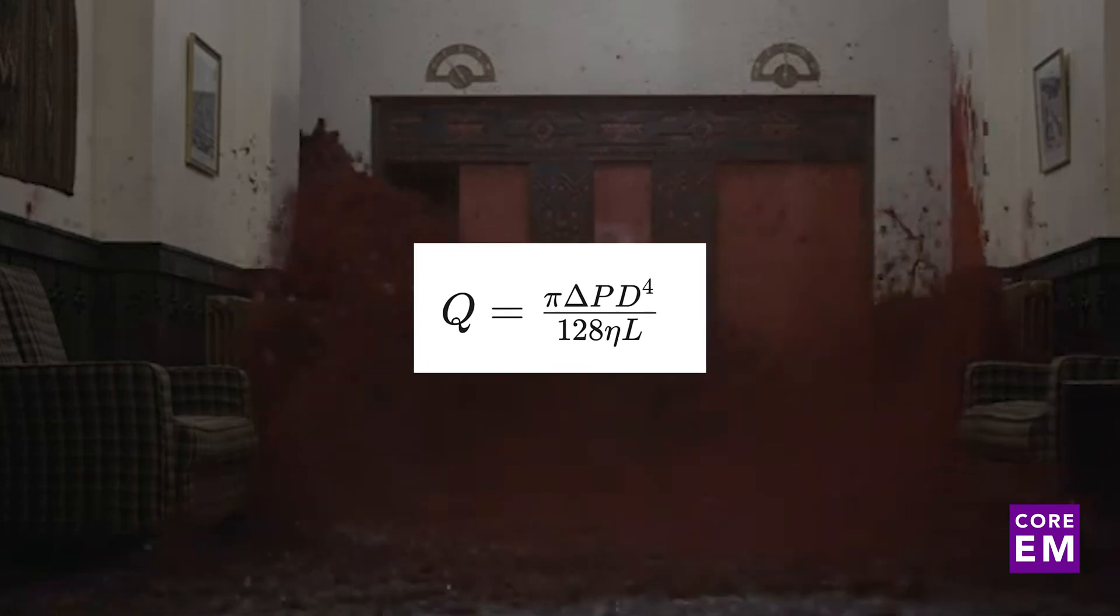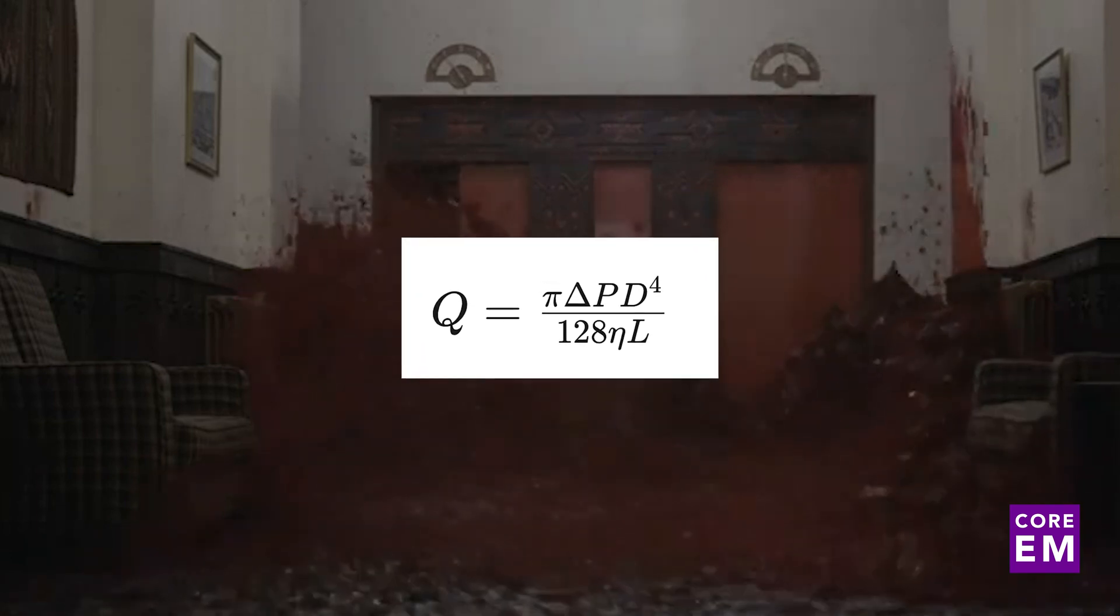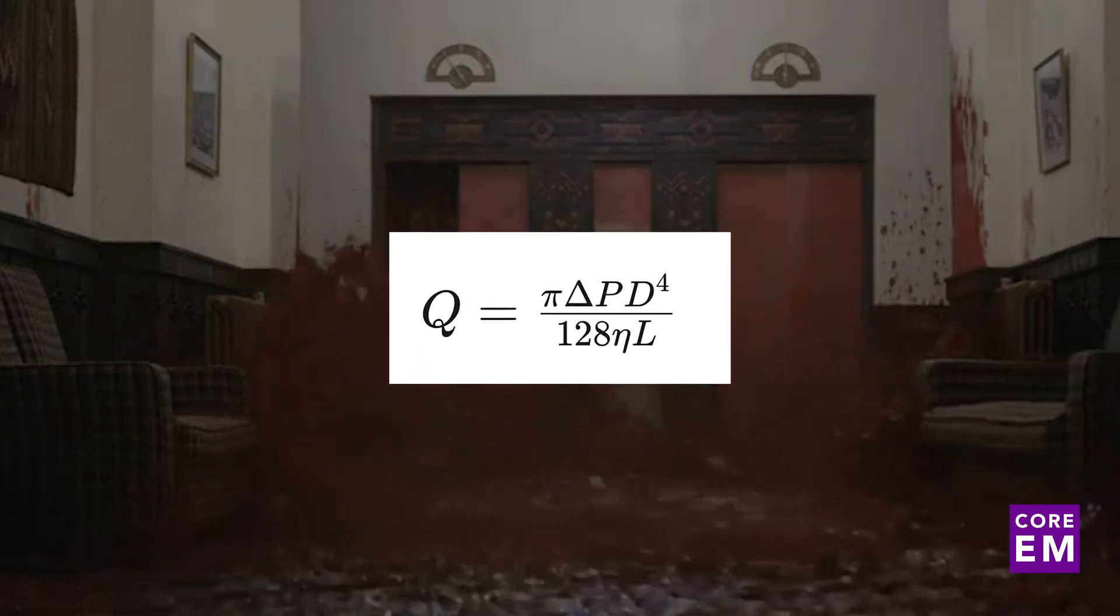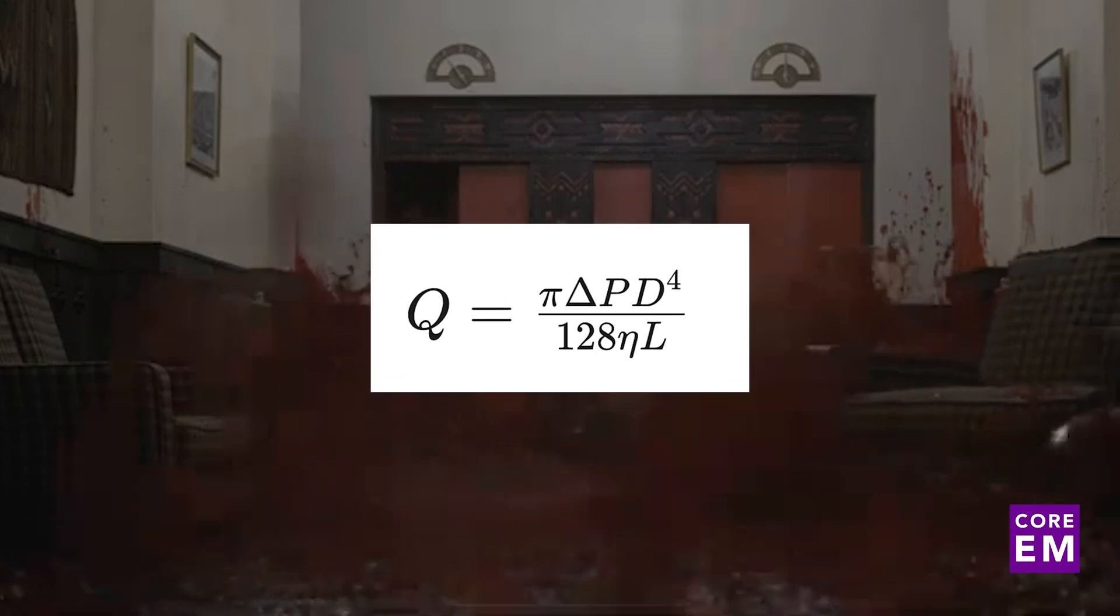So when you have a patient who requires a lot of volume and needs it quickly, whether that's from trauma or a bad GI bleed, choose your access wisely and keep this formula in mind.